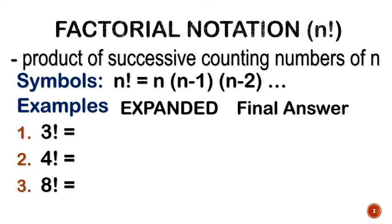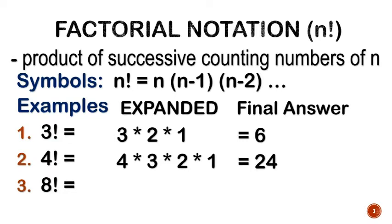For example, we will have the expanded and then the final answer. 3 factorial means 3 times 2 times 1, and naturally the answer is 6. For 4 factorial, that will be 4 times 3 times 2 times 1, which will be equal to 24. Now, what about 8 factorial? You can shorten the writing as 8 times 7 times 6 times dot dot. The dot dot will represent all numbers in between 6 and 1, which covers 5, 4, 3, and 2, but it still ends at 1. Naturally, the answer will be 40,320.